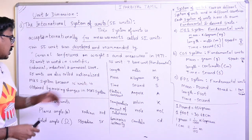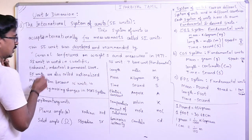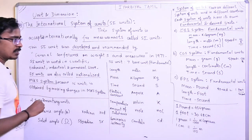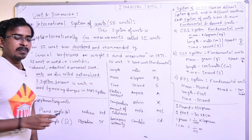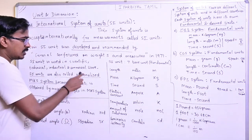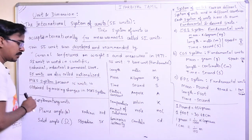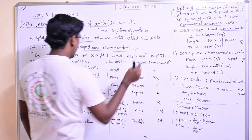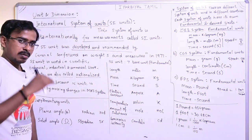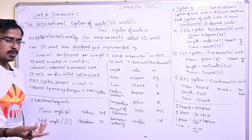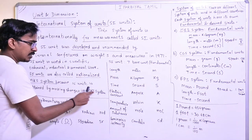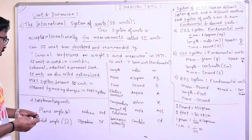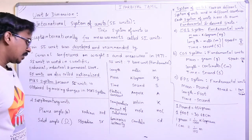SI units are also called the Rationalized MKS System. That means changes were made to the MKS system to produce SI units. Rationalized means changes are made. So, SI units are obtained by making changes in the MKS System — that is why SI units are called the Rationalized MKS System.